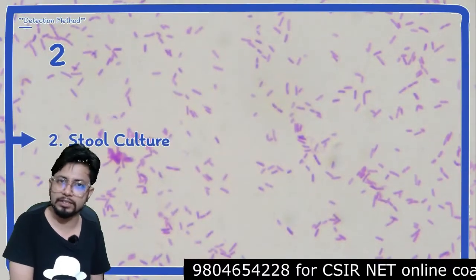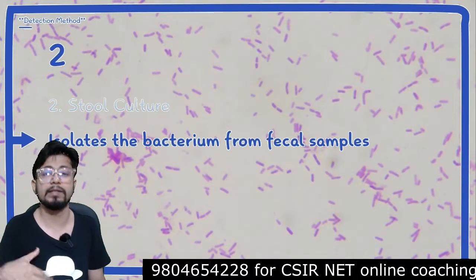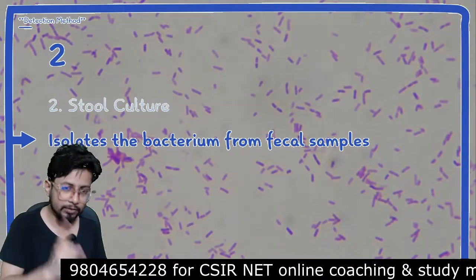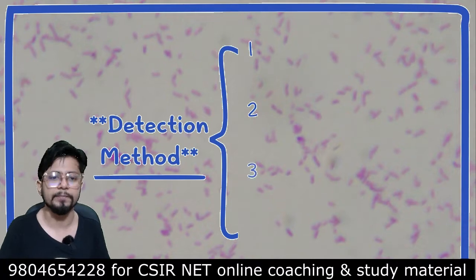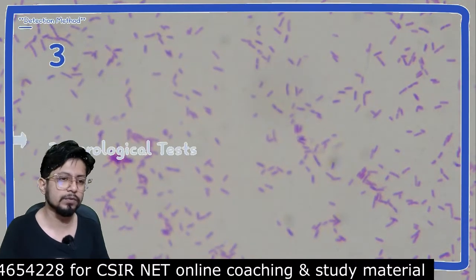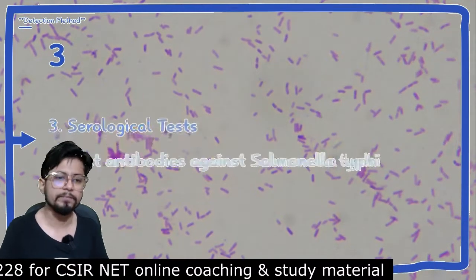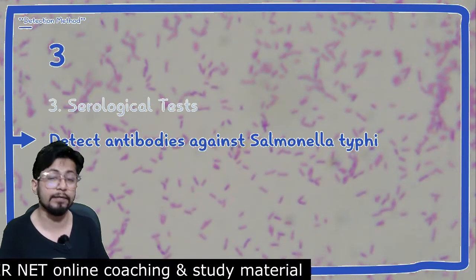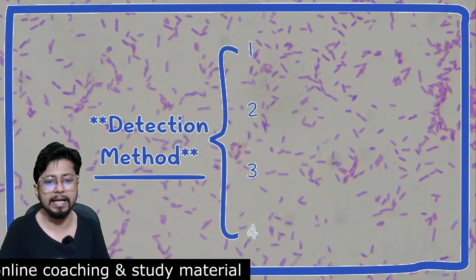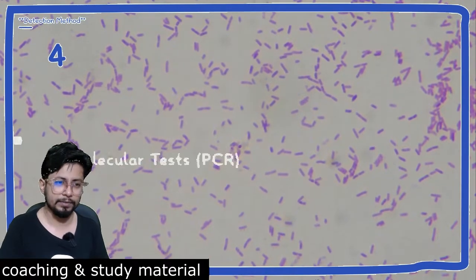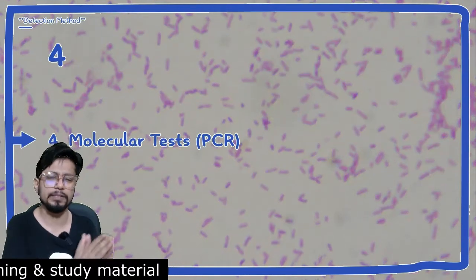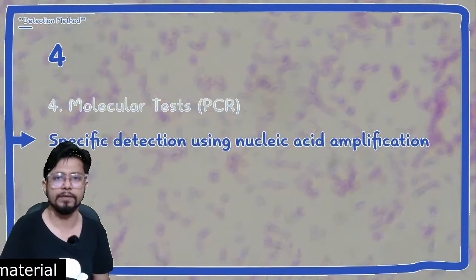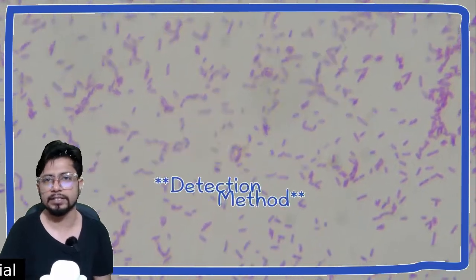The second method is stool culture, because typhoid fever also causes diarrhea — bacteria are isolated from fecal samples. The third method involves serological tests, which detect antibodies against Salmonella typhi produced by the body. The fourth technique is PCR, which detects the nucleic acid component of Salmonella typhi.